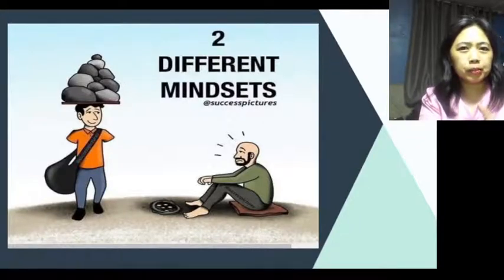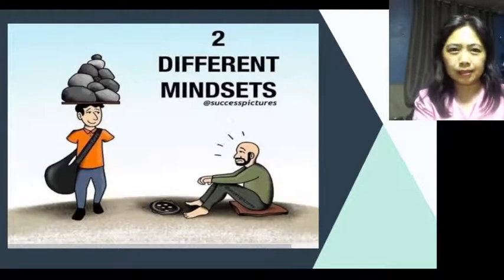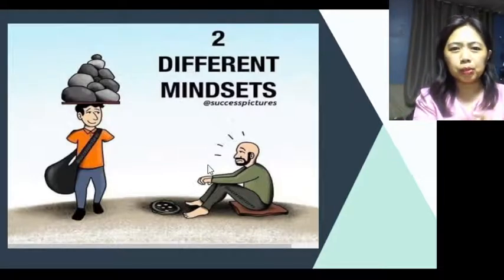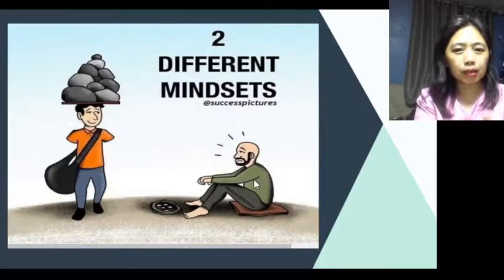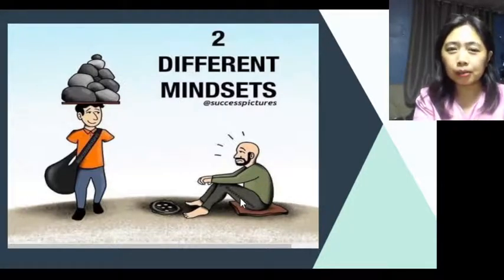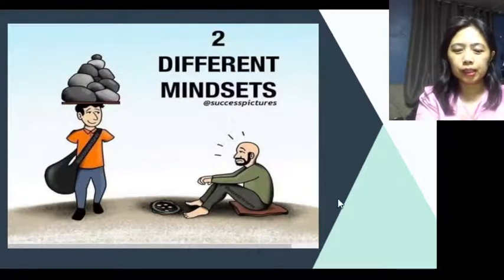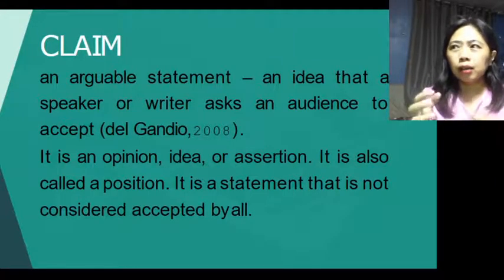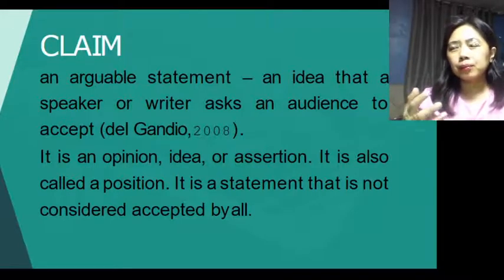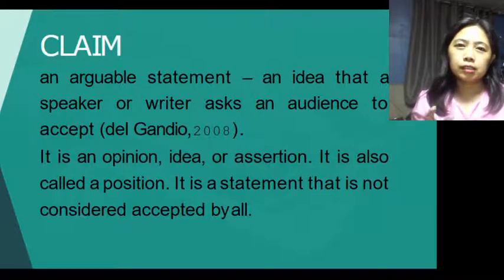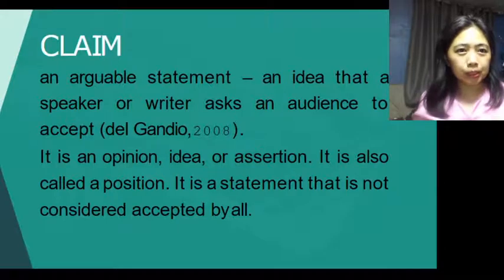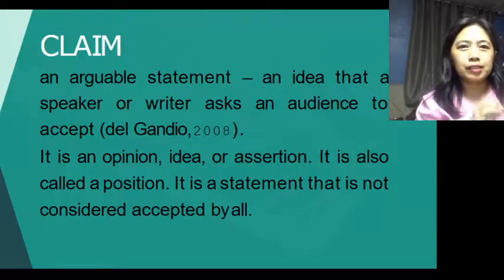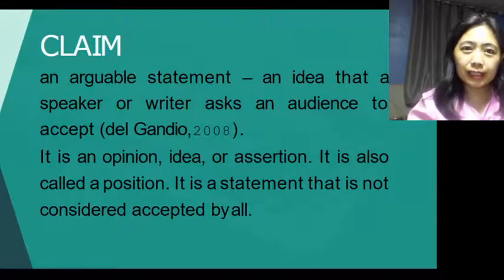Going back to the picture, a claim means it's just your own idea, your own opinion — but it doesn't mean it's true for everyone. Some people might judge that the man squatting is lazy, while others might see it differently — maybe he has a problem, or he can't walk. So a claim is an arguable statement. You might say something but it might not be accepted by all, because it is just your judgment without a solid basis.